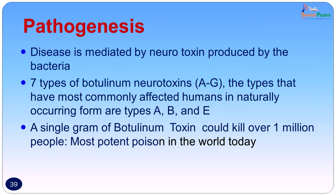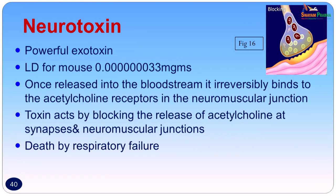This disease is mediated by a neurotoxin produced by Clostridium botulinum. Seven types of botulinum neurotoxins are present: A, B, C1, C2, D, E, F, and G. The types that most commonly infect humans are fortunately only three: type A, B, and E. Polyvalent antiserum used for botulinum usually contains antiserum to types A, B, and E. A single gram of botulinum toxin could kill over 1 million people — it is the most potent poison in the world today, more powerful than strychnine and rattlesnake venom. The lethal dose for a mouse is 0.0033 nanograms.